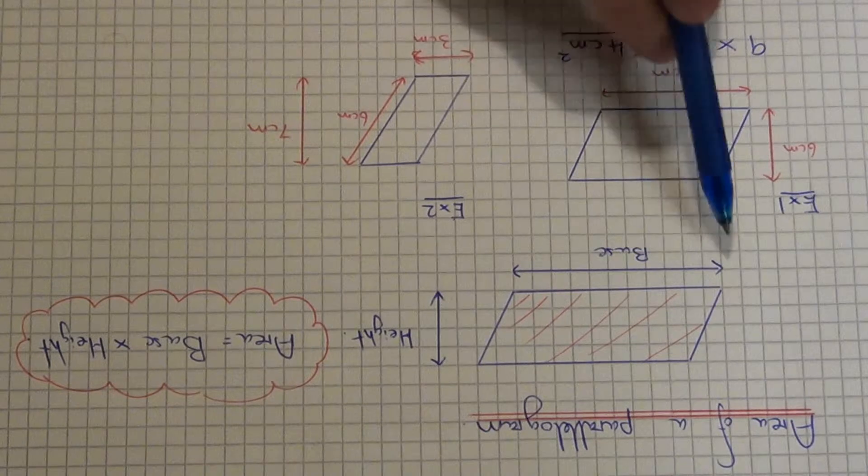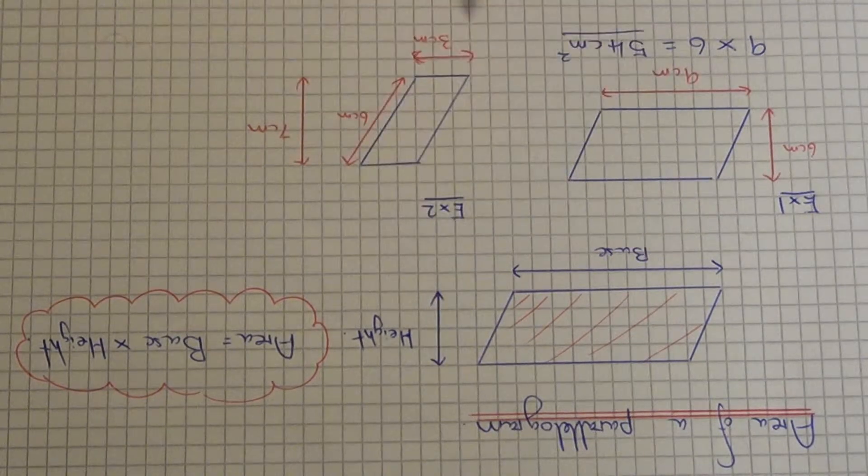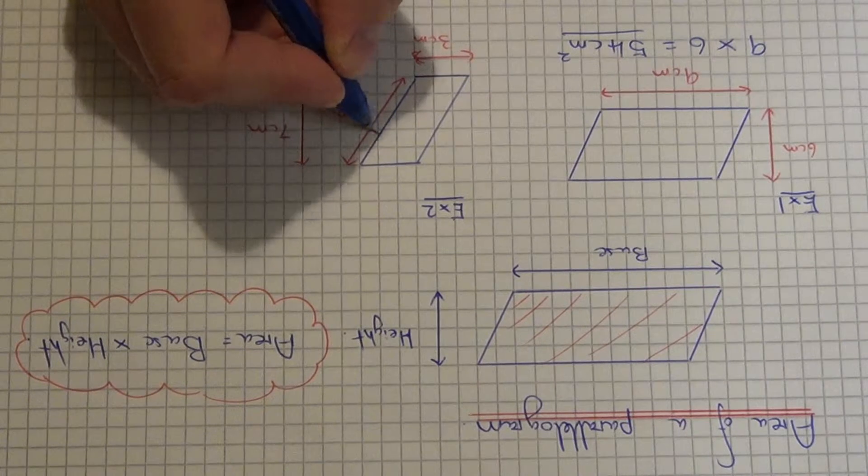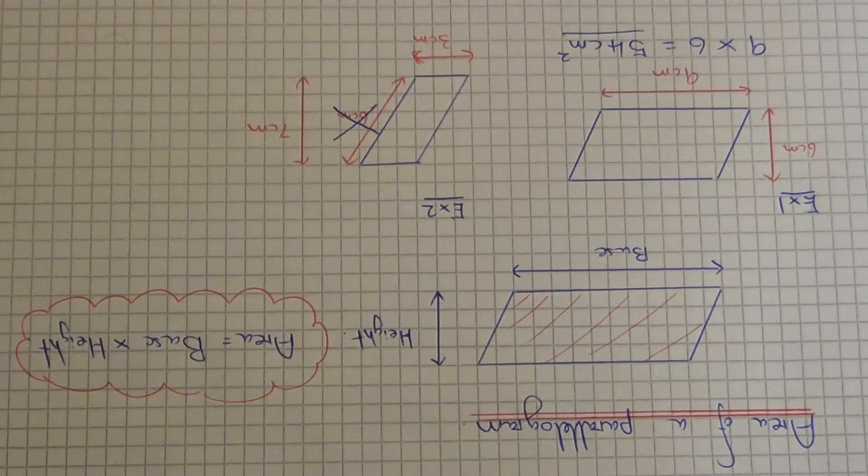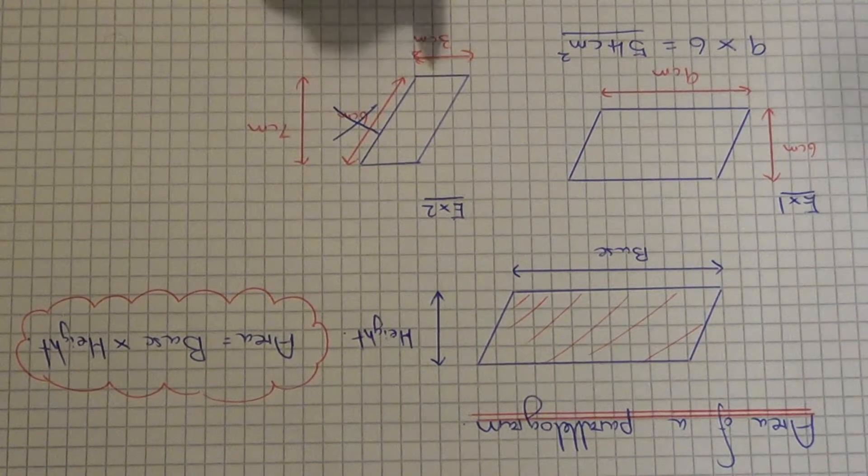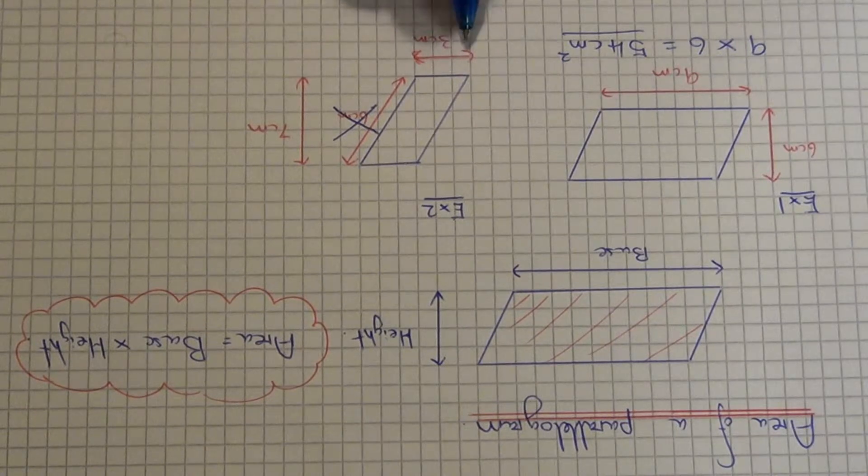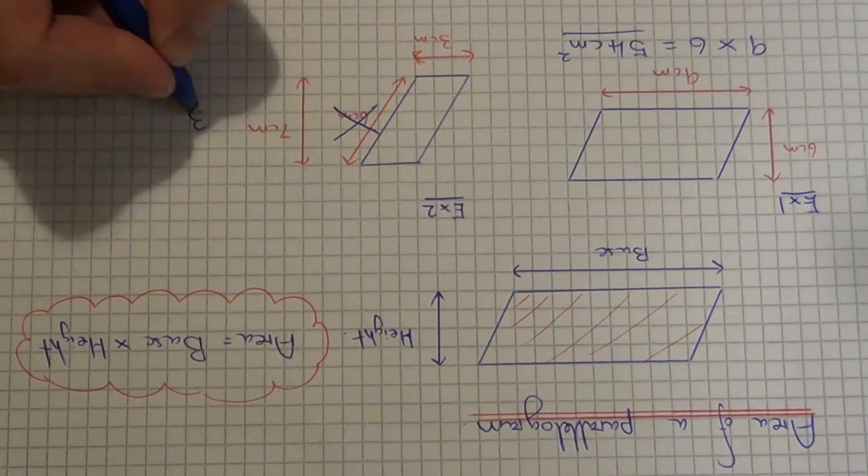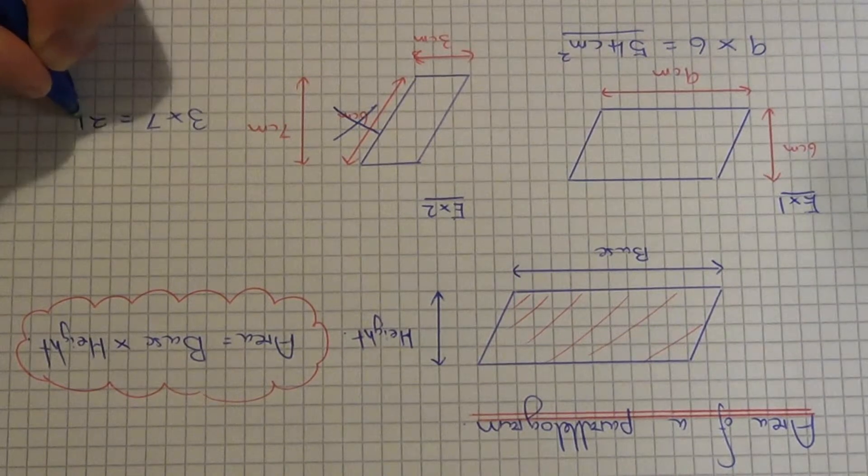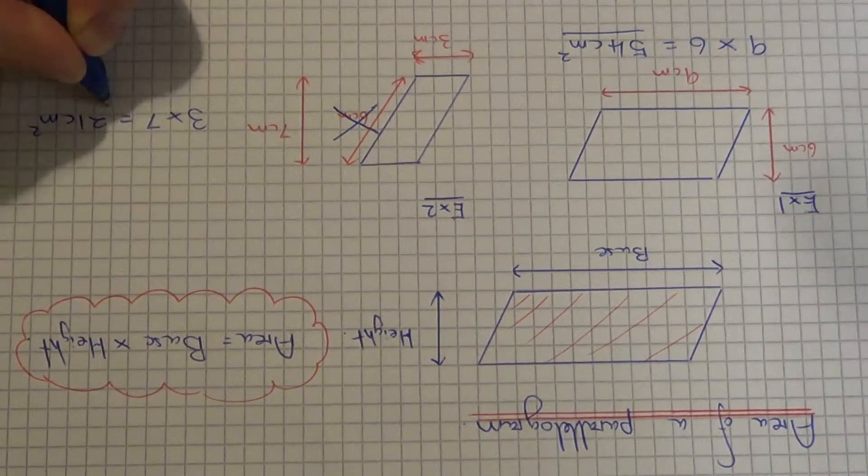But remember it's base times the perpendicular height, so you don't use the sloping height. So we can cross out the six centimetres. So all we have to do next is to multiply the three by the seven. So three times seven is 21 centimetres squared.